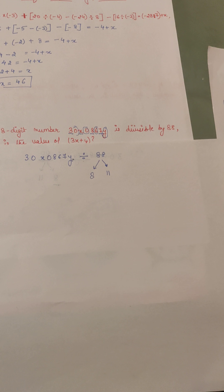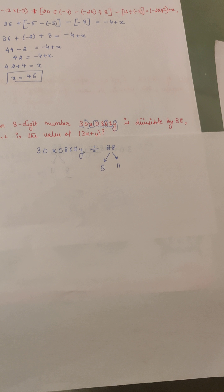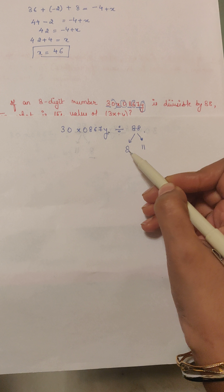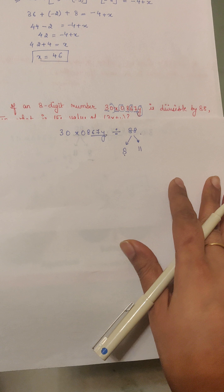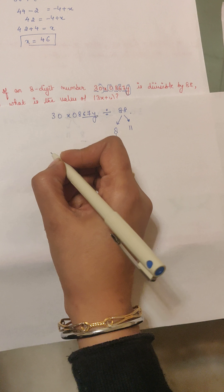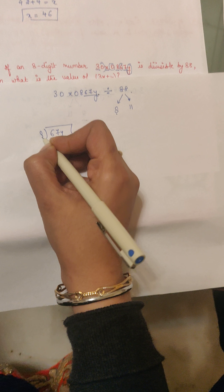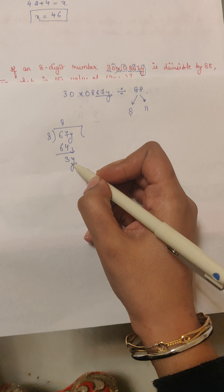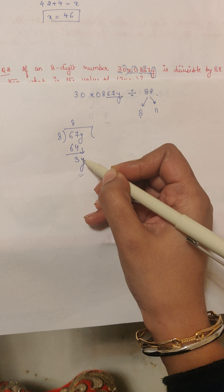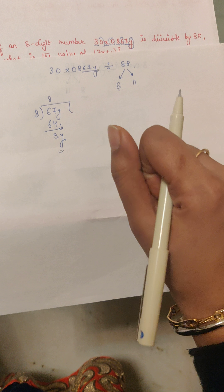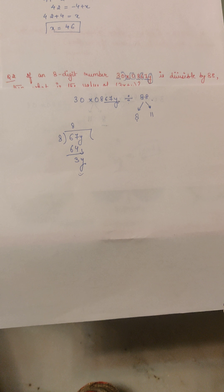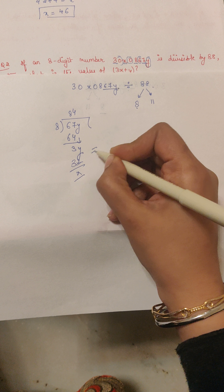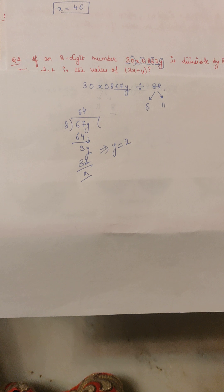Break the number into parts for which divisibility rules are known — up to 11 or 12, most people know the rules. The divisibility rule of 8 says the last three digits of a number should be divisible by 8. So 67Y must be divisible by 8. Dividing: 8 eights are 64, you're left with 3 and Y, so 3Y must be divisible by 8. Looking at the 8 times table, the only number with 3 in the tens place is 32, so Y must equal 2 to be completely divisible by 8.